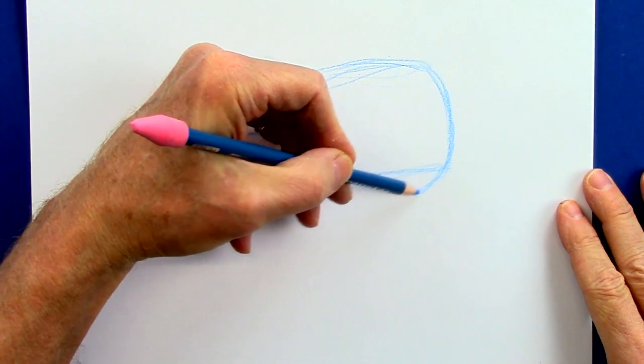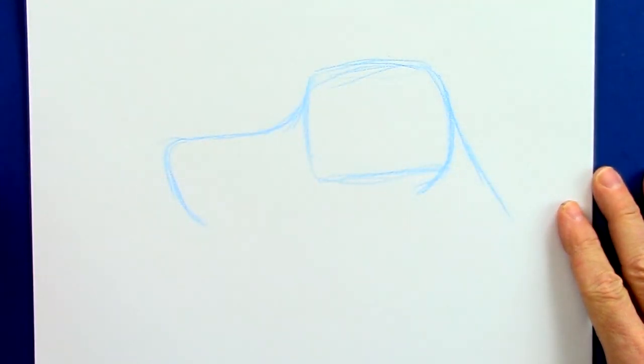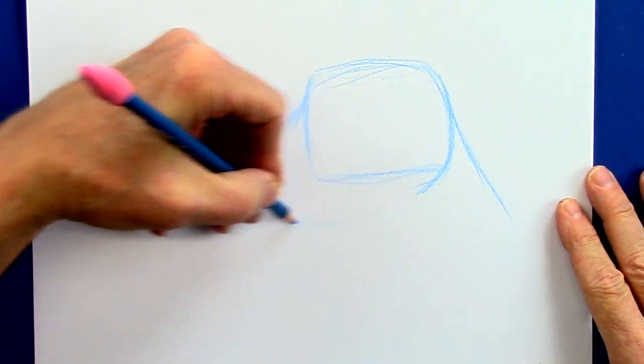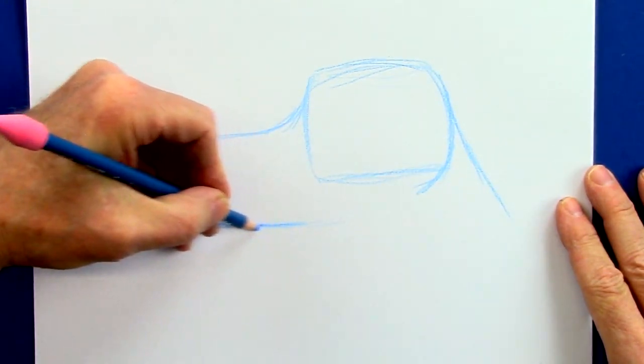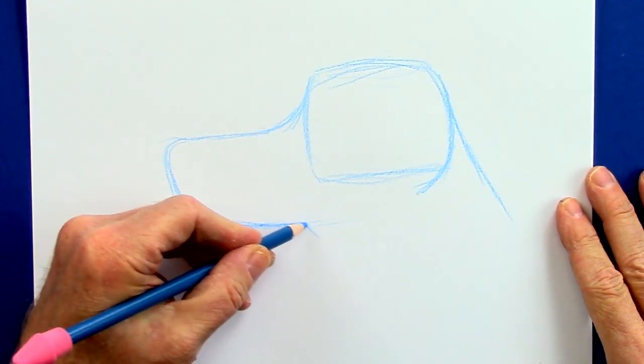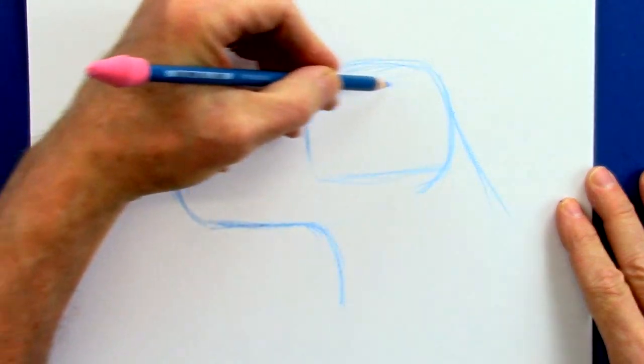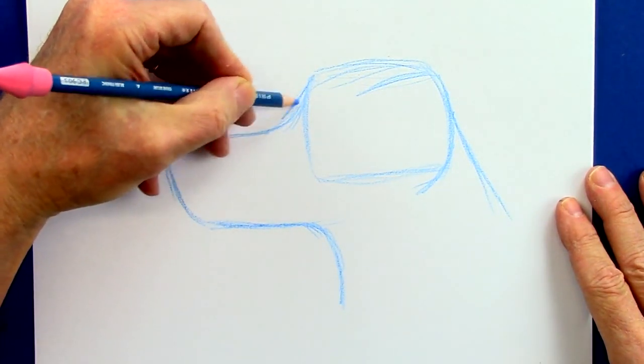And as this comes into here, the neck comes like this. Alright, we're going to bring the bottom of the mouth like so and bring it back in here. We're going to be adjusting this as we go.